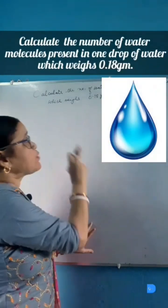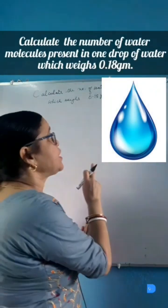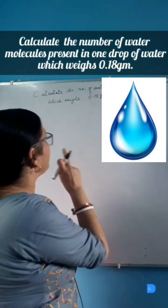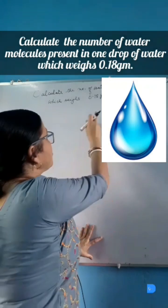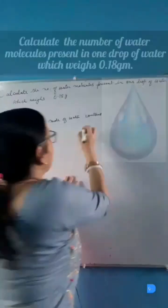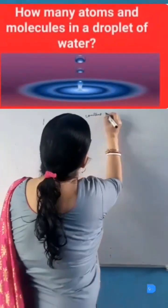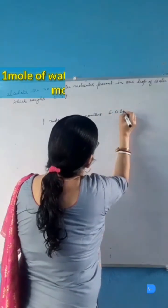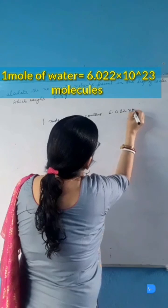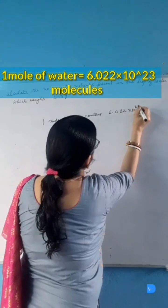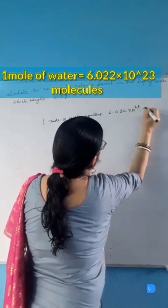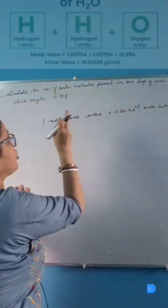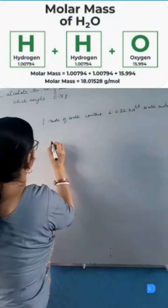Calculate the number of water molecules present in one drop of water which weighs 0.18 gram. One mole of water contains 6.022 into 10 to the power 23 water molecules. Now we will find the gram molecular weight of water.